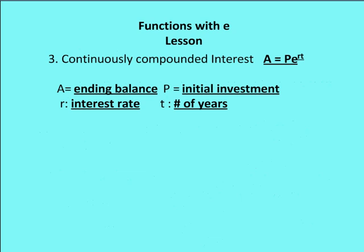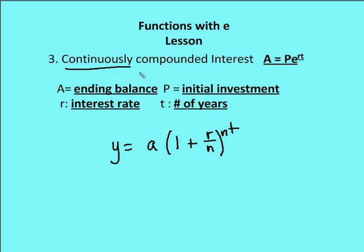Why is the natural base important? We talked about compounding interest — what happens when you apply interest over a period within a period. If I compound interest quarterly within a year, my model changes to Y = initial investment × (1 + rate/n)^(NT). What E gives us is the ability to compound interest continuously. The model becomes A = P × e^(RT), where P is the initial investment, R is the interest rate, and T is the number of years.